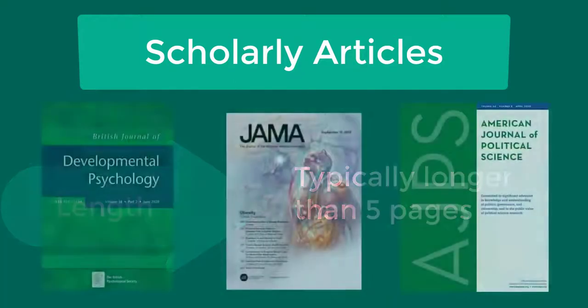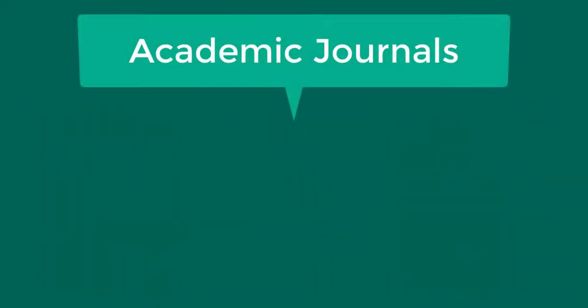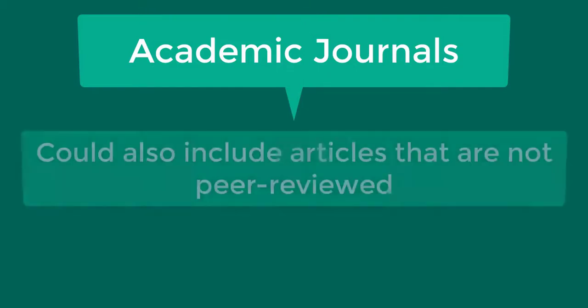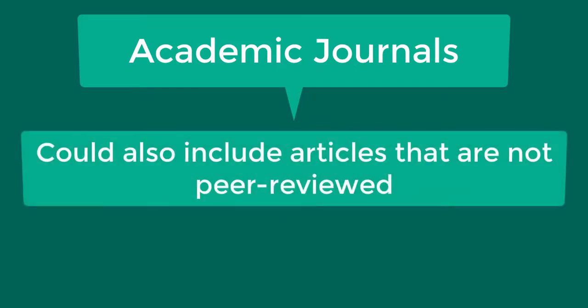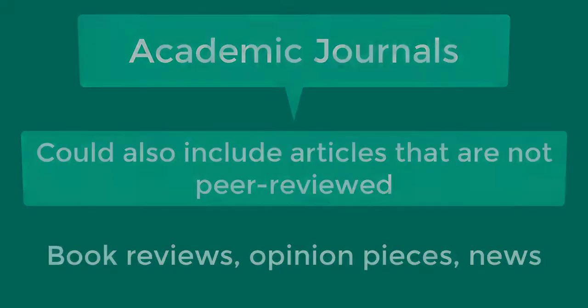Here are some examples of academic journals. While academic journals include peer-reviewed articles that discuss original research, they might also include other types of articles such as book reviews, opinion pieces, and news items, which are not considered to be scholarly articles.